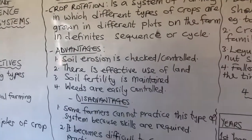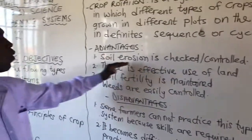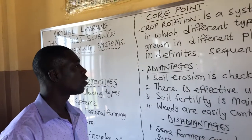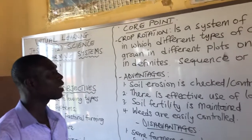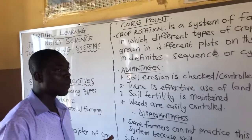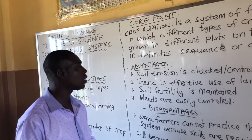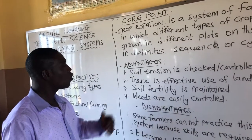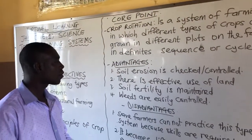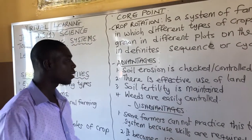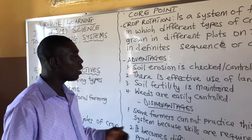Now let's look at the advantages of practicing this type of farming system. You can see that soil erosion is checked or controlled because of the various crops that are mixed on the farm at the same time of the year or season. For example, cover crops are included and therefore they check what we call soil erosion. Secondly, there is effective use of land — we don't waste the land. Soil fertility is also maintained, and weeds are easily controlled as well.